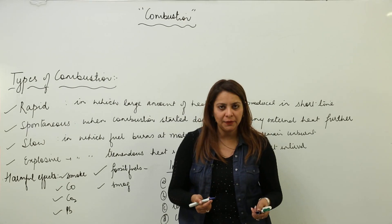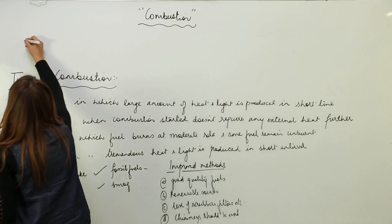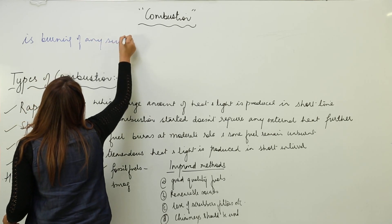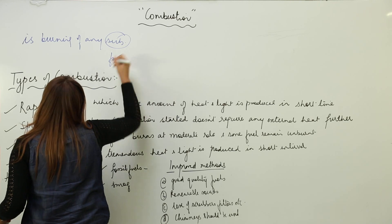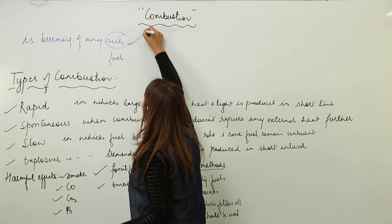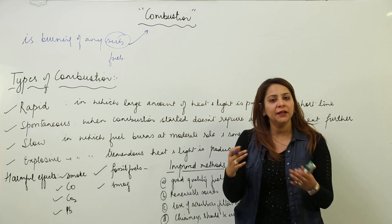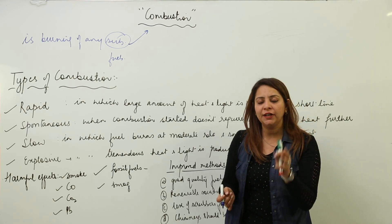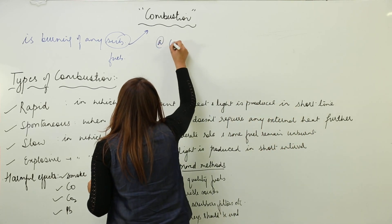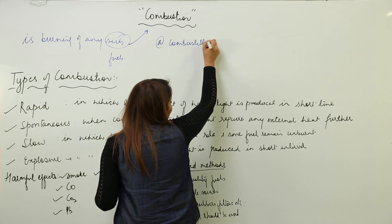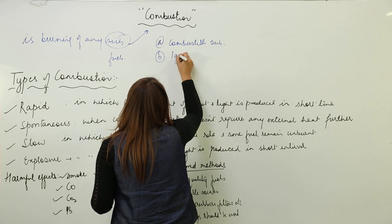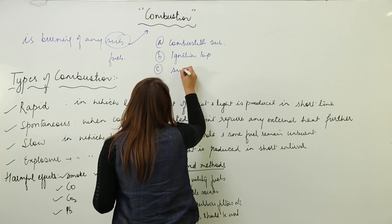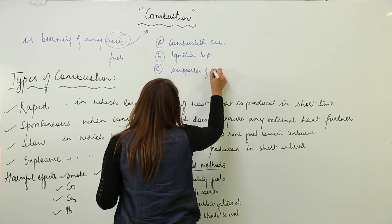We are starting with combustion. Combustion is the burning of any substance, particularly fuels, but it can be other substances as well. Three conditions are mandatory for combustion: one is the combustible substance, second is the ignition temperature, and third is the supporter of combustion — that is oxygen gas.